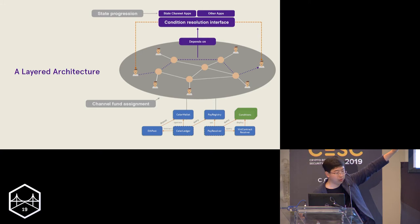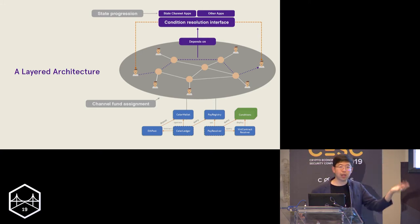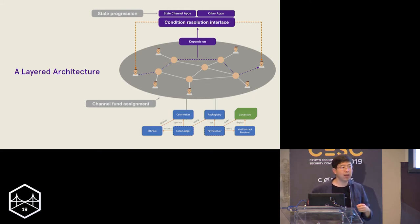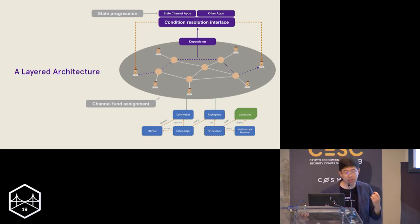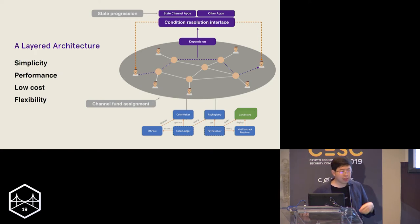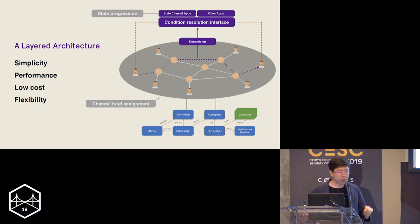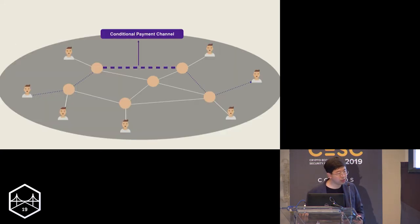In terms of the generalized state channel piece, we have this underlying payment network connecting to the conditional resolution interface and also to state channel applications. The state channel application itself has a state progression protocol defined in it to allow developers to easily implement their applications in a state channel manner. In designing this layered architecture, we strive to achieve four goals: simplicity, extremely high performance, very low cost, and high flexibility for future extension.